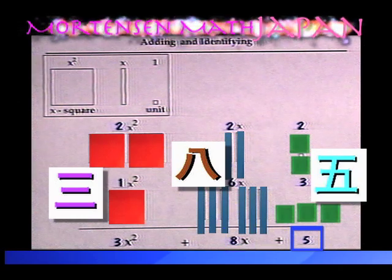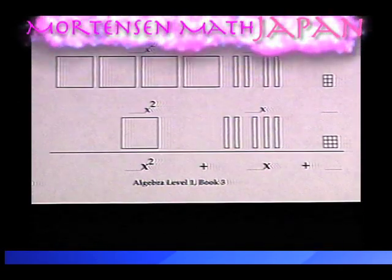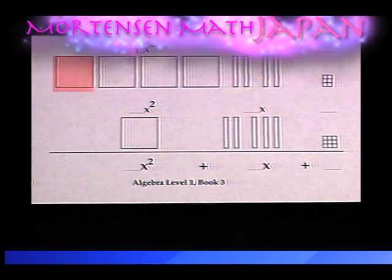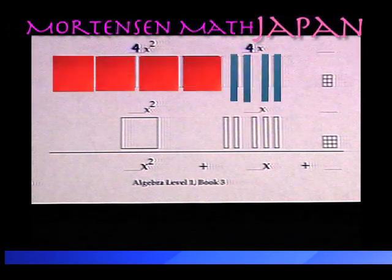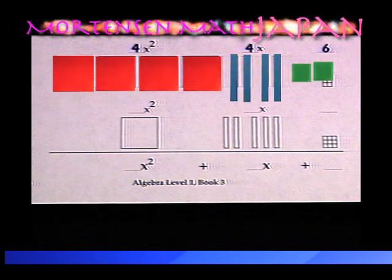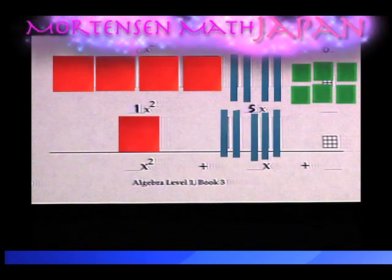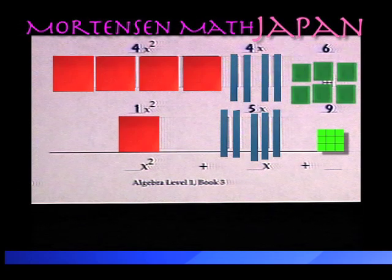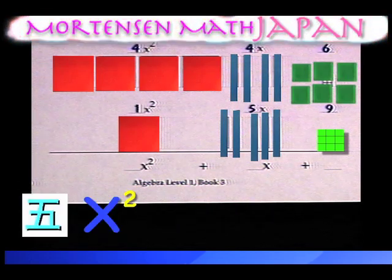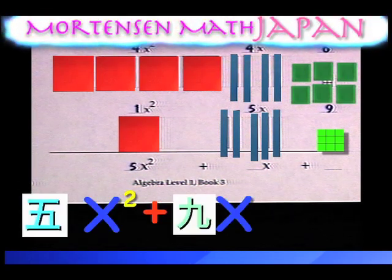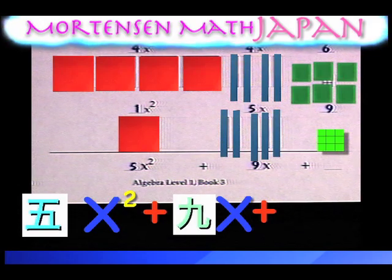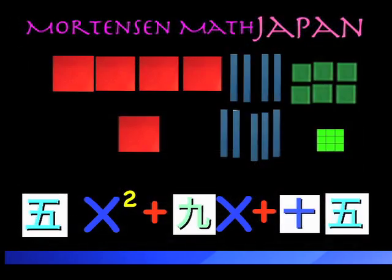The last problem is done the same way. There are 4 x-square, 4 x, and 6 units. And 1 x-square, 5 x, and 9 units. There are 5 x-square, plus 9 x, plus 15. You're doing great!